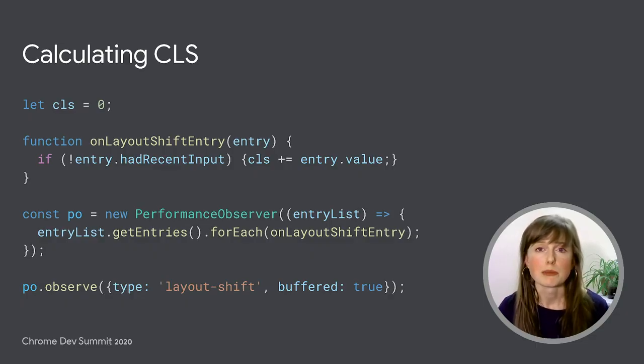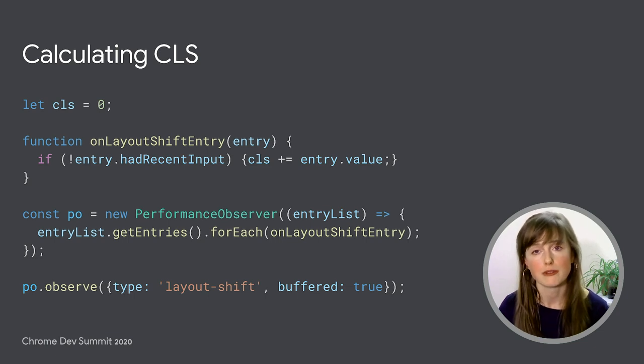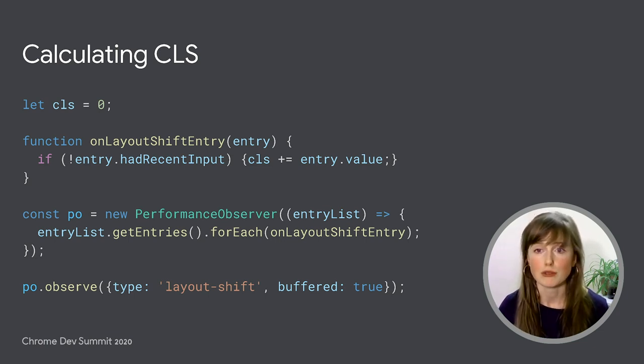I'm going to start today by walking you through how CLS measurement is implemented in code. I want to do this because I think seeing the implementation in code clears up a lot of the questions and confusion around when CLS is reported and finalized, particularly for single page applications. CLS is measured by using a performance observer to observe for layout shift events. When a layout shift occurs, the performance observer invokes a callback function, and this callback function adds to the running layout shift score — in other words, CLS.